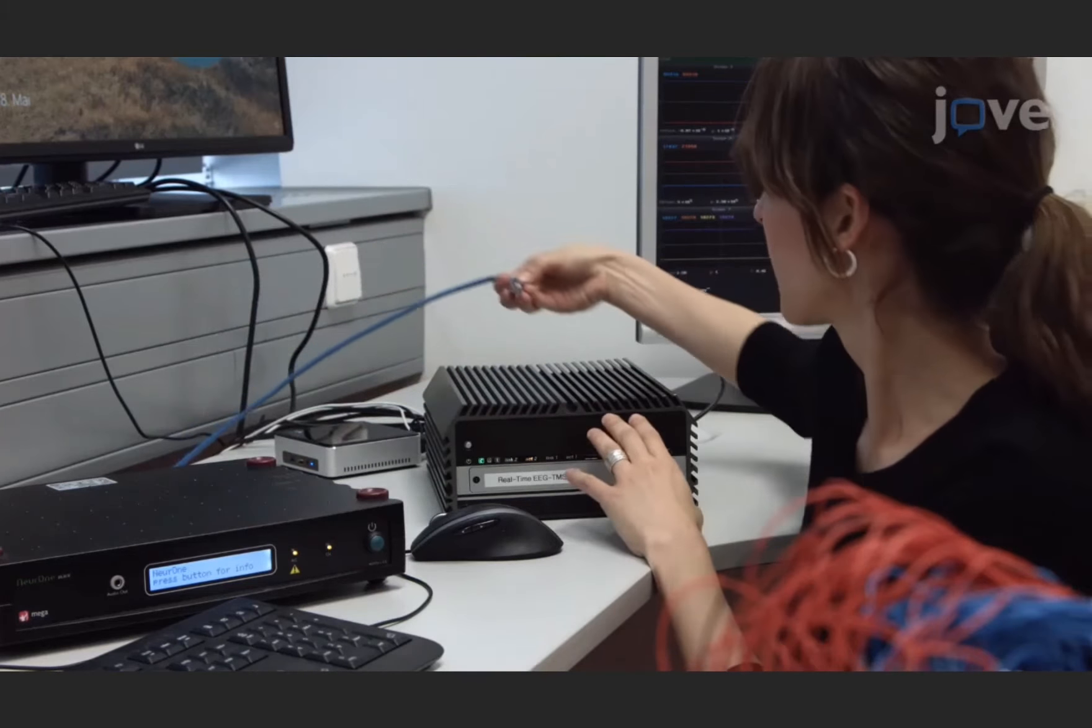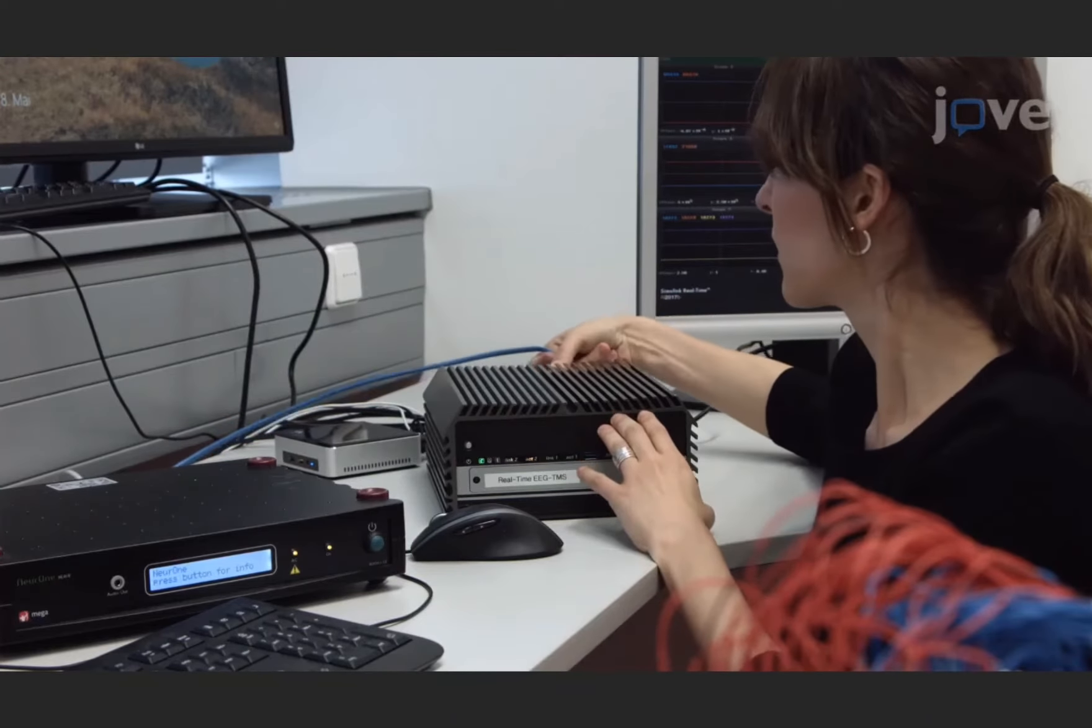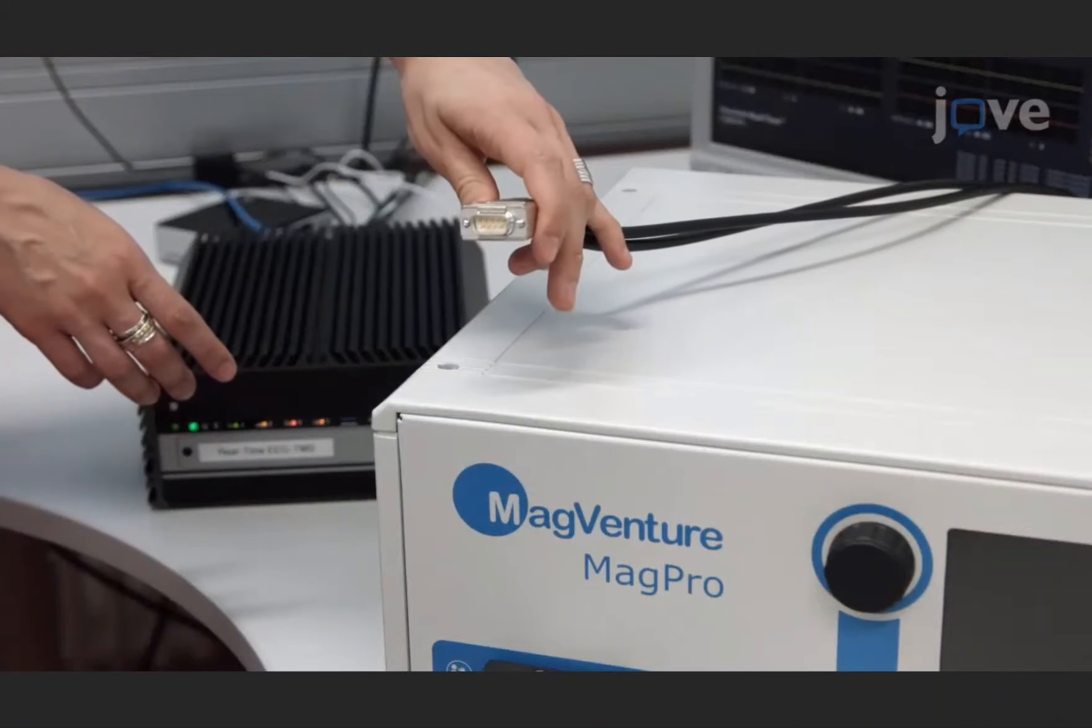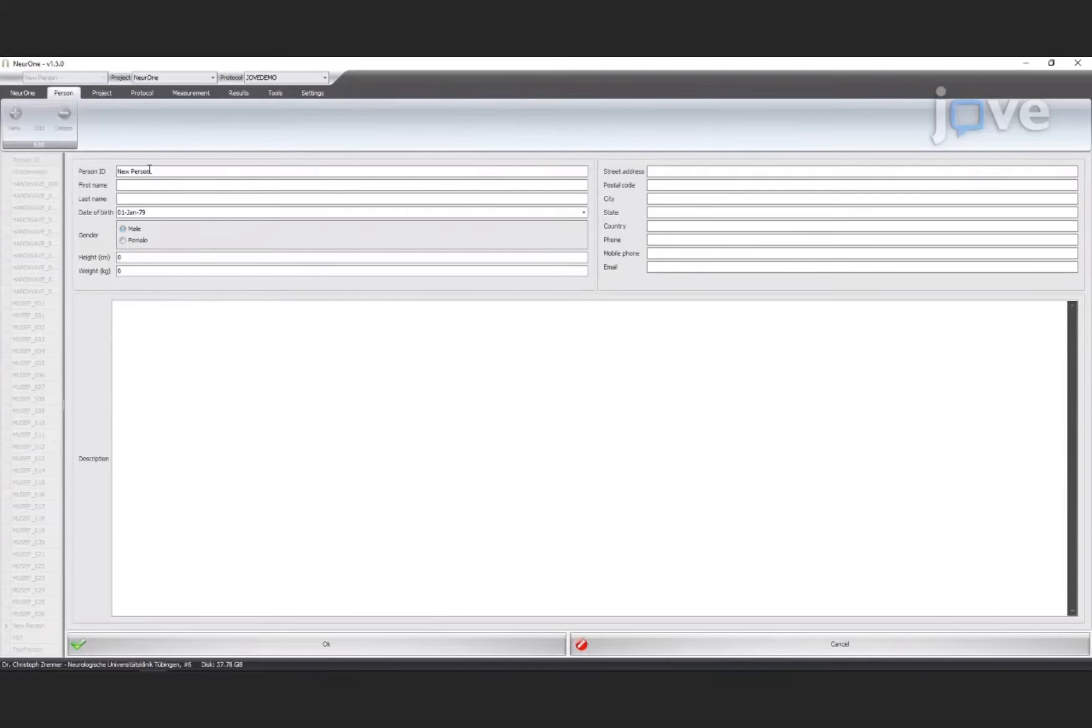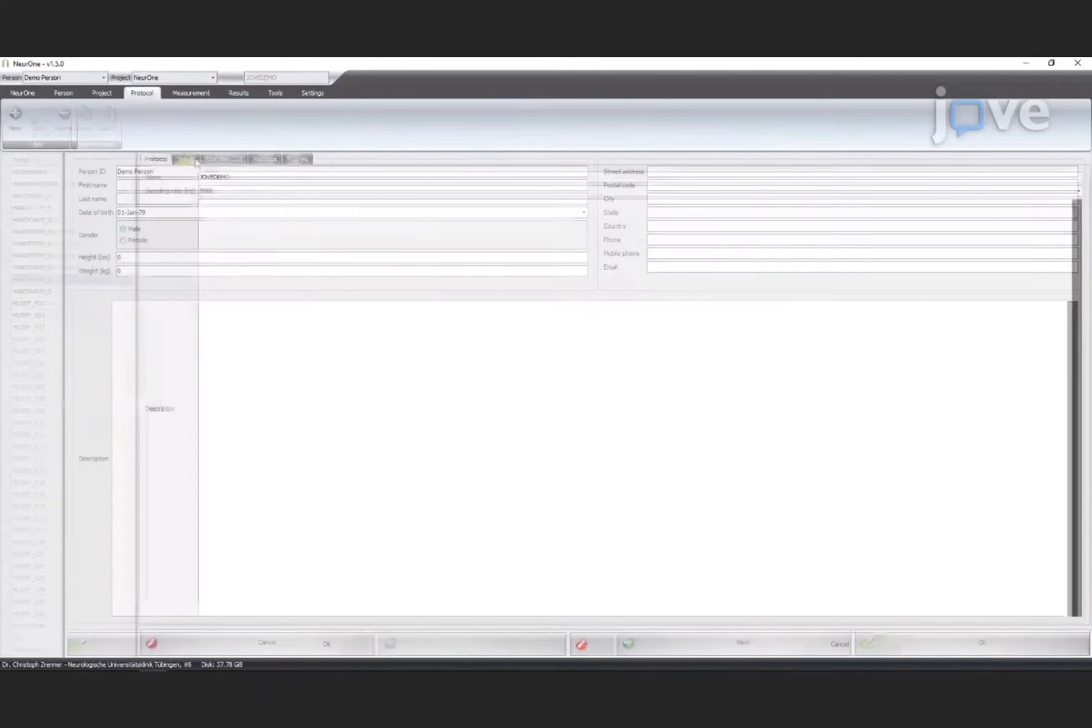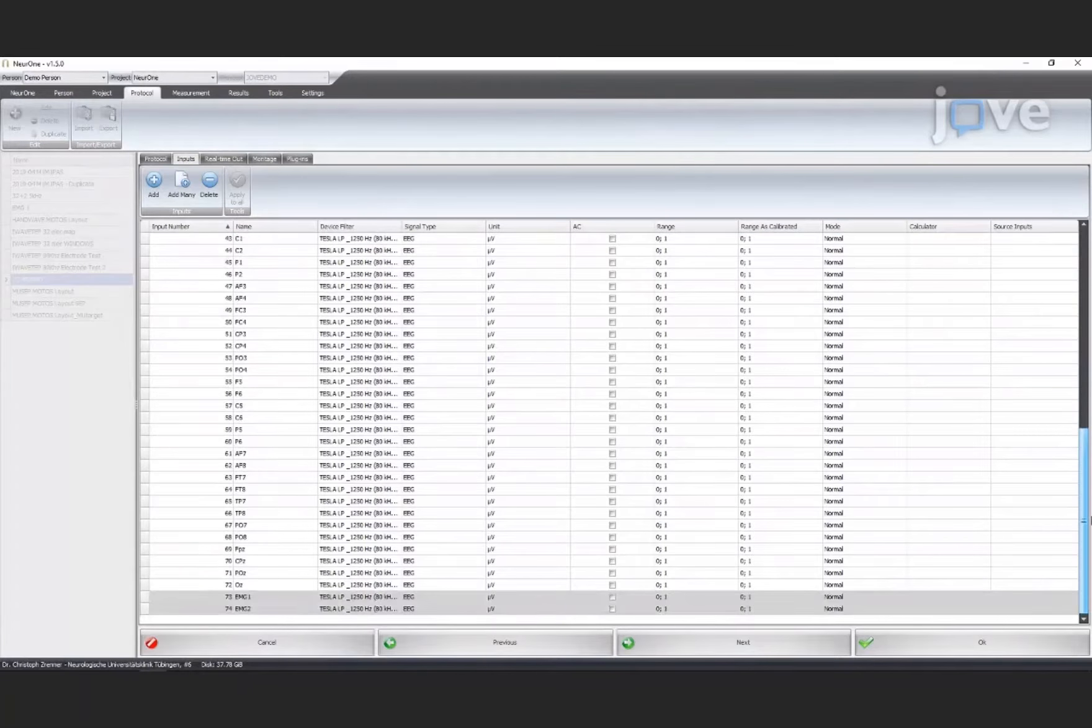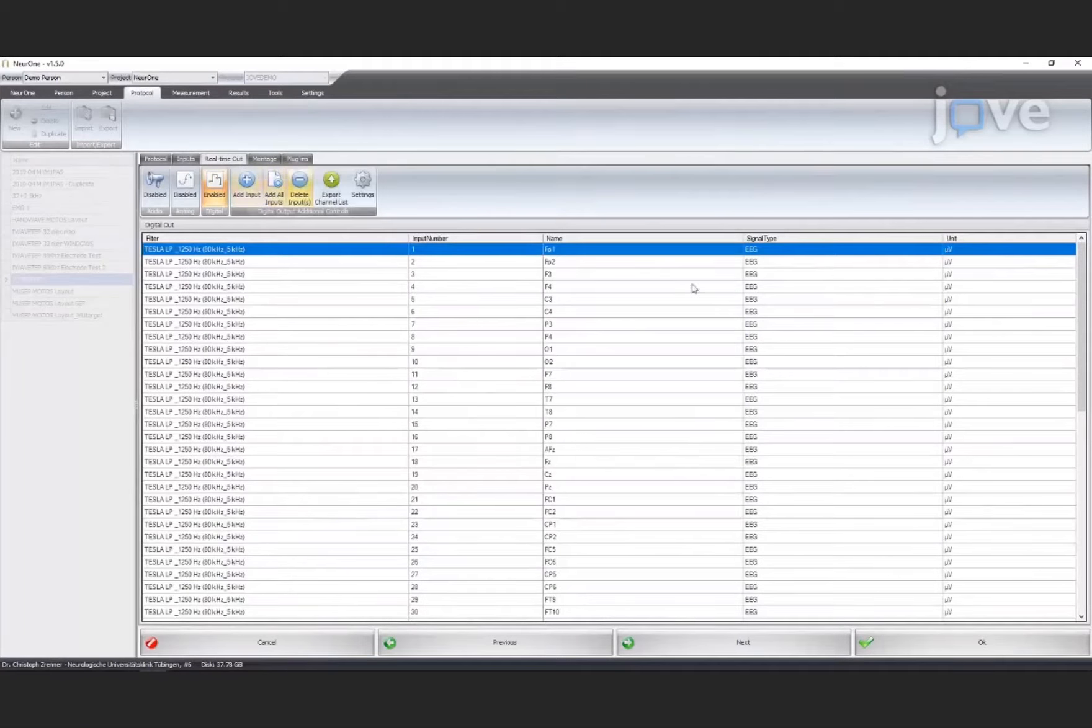Connect the real-time output of the EEG system to the real-time device input, and connect the output of the real-time device to the trigger input of the TMS stimulator. Register the study participant in the system, making sure that the protocol matches the layout of the EEG cap and that the relevant channels are sent to the real-time output.